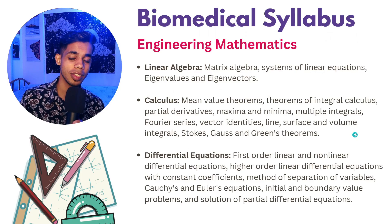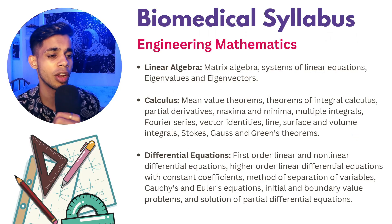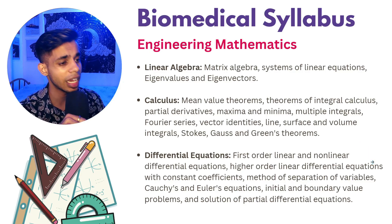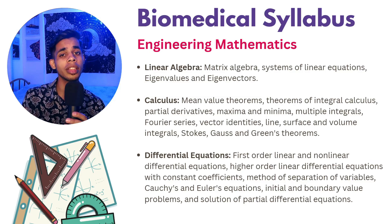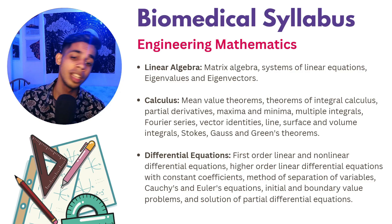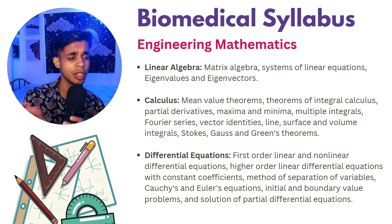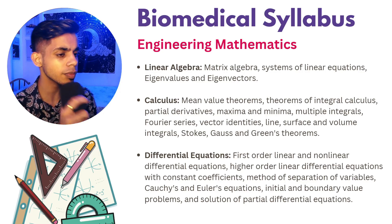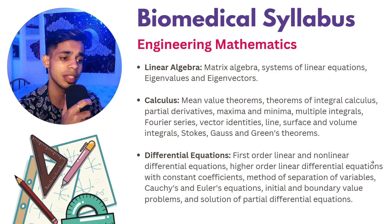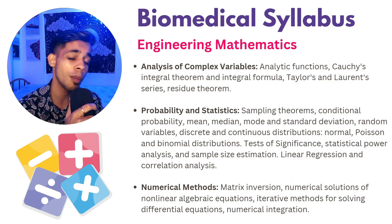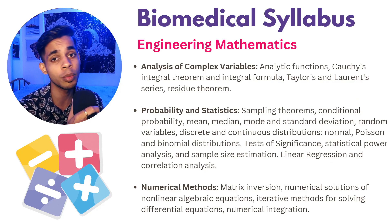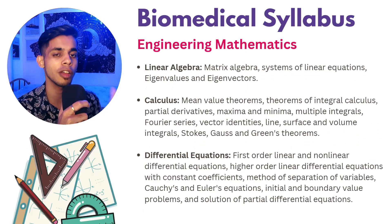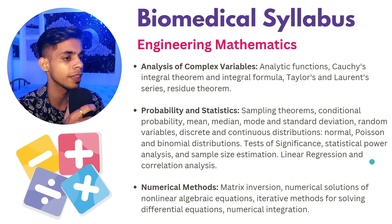The first section in the biomedical GATE syllabus is engineering mathematics. Topics include linear algebra — matrices, systems of linear equations, eigenvalues, eigenvectors — calculus, differential equations, analysis of complex variables, probability and statistics, and numerical methods. Each of these main topics has individual subtopics that you need to study.